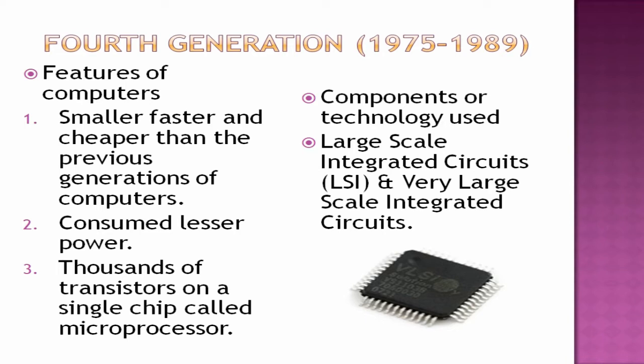The fourth generation of computers lasted from 1975 to 1989. Features: smaller, faster, and cheaper than the previous three generations, consuming less power. Thousands of transistors were placed on a single chip called a microprocessor. The microprocessor is a small chip present inside your CPU — the system unit, or Central Processing Unit. The CPU is like a cabinet containing the hard disk drive, floppy disk drive, CD drive, motherboard, RAM, and many other components. The chip technology used in the fourth generation was Large Scale Integrated circuits (LSI) and Very Large Scale Integrated circuits (VLSI).